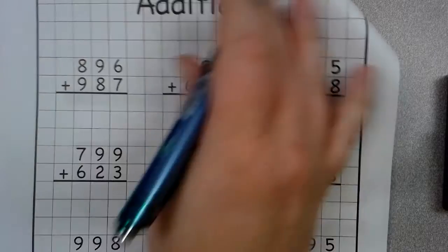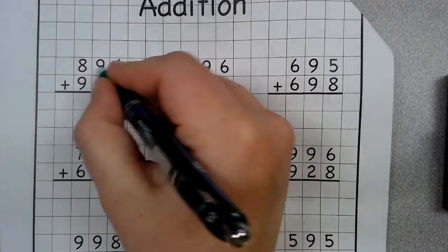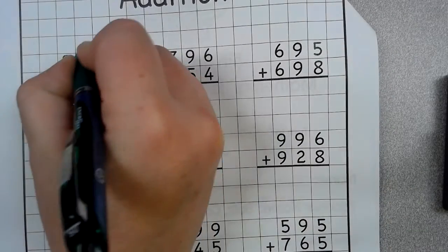so just like this, 896 plus 987. 6 plus 7 is 13, so you put your 3, carry your 1.